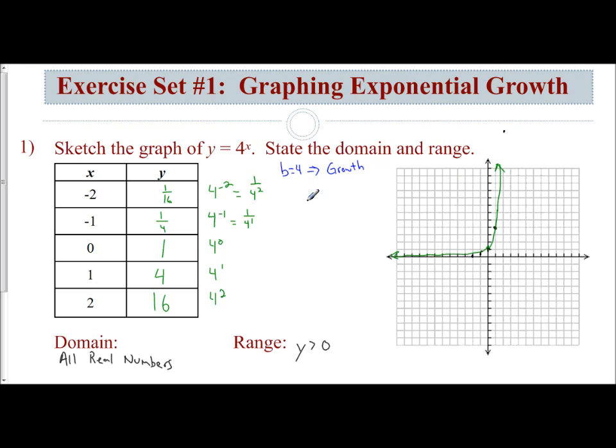The way you do it is you create a table of values, then plot the points and connect with a smooth curve. What you're going to realize is the table of values is the most important because you're not going to be able to plot all the points. Exponential growth is increasing fast.